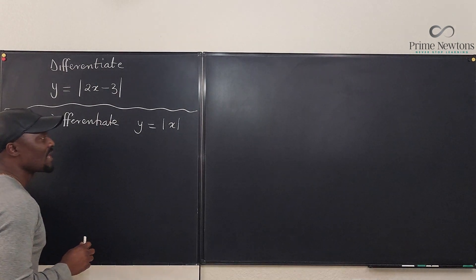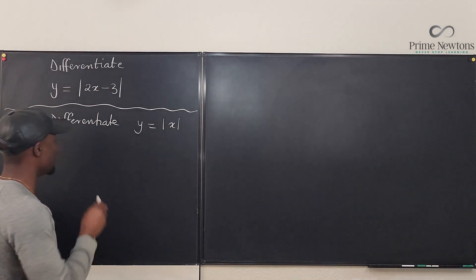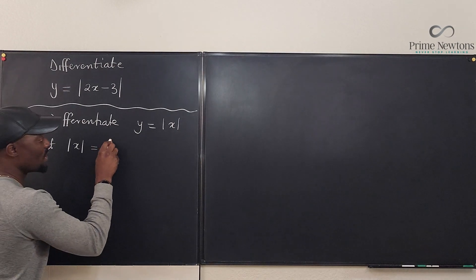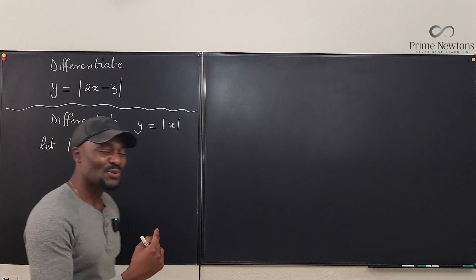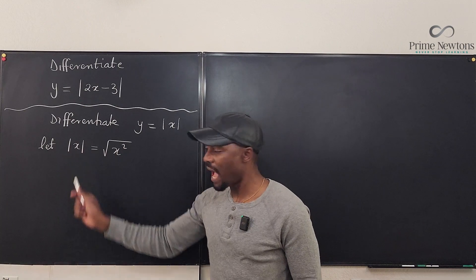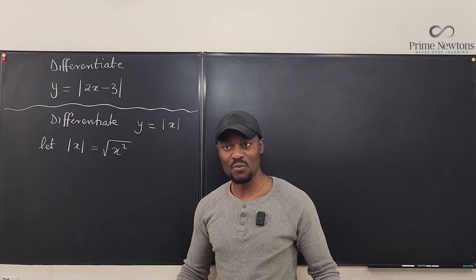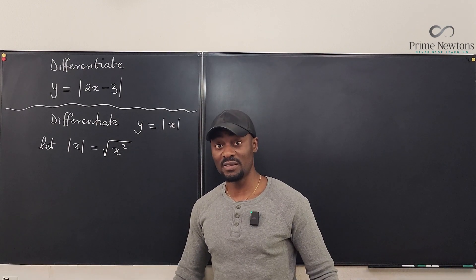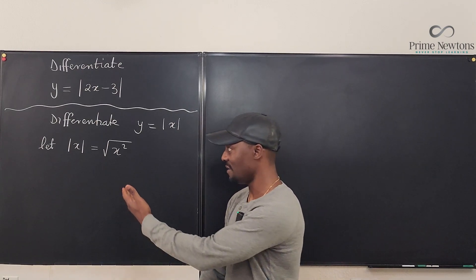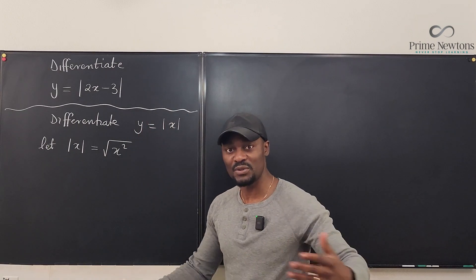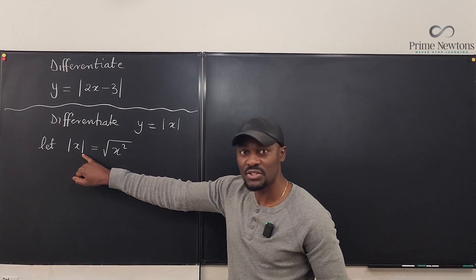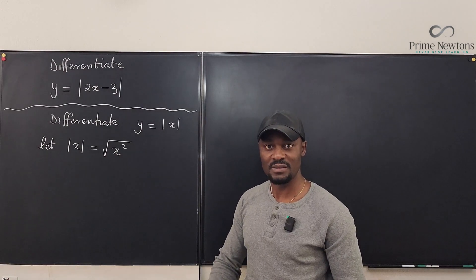The absolute value of x can be written as the square root of x squared. This is what I was never taught — that the square root of x squared is the absolute value of x. They just told me it was plus or minus whatever was on the other side. If there's nothing on the other side, the answer is not x — it is plus or minus x. Both plus x and minus x work when squared. So this is what we're going to differentiate using the chain rule.